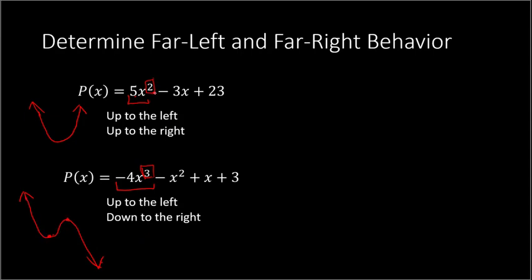Whereas here with the 2nd power term — the polynomial is a 2nd degree — we can have at most 1 turn, or 1 change in direction. We see that happening here: it goes down, and then right here at this vertex, at this point, it starts going back up. It changes direction one time.